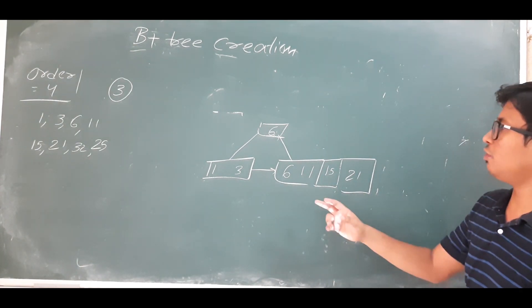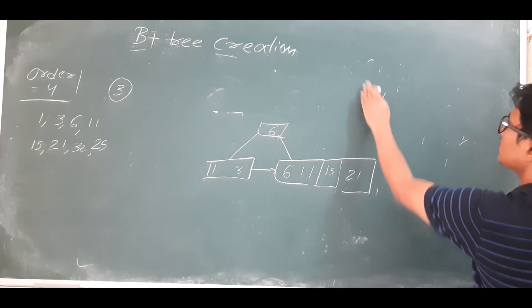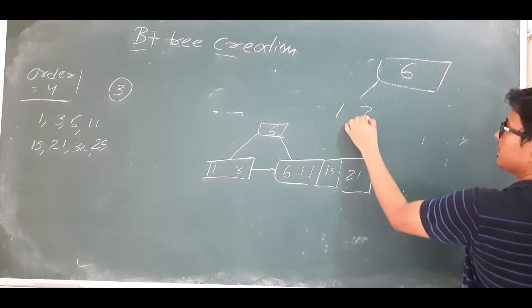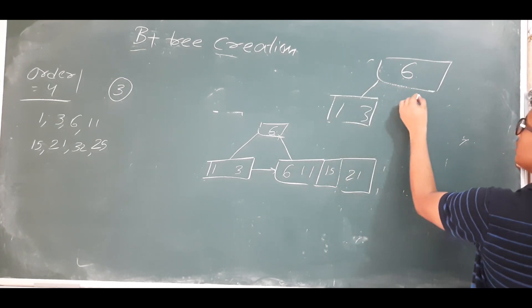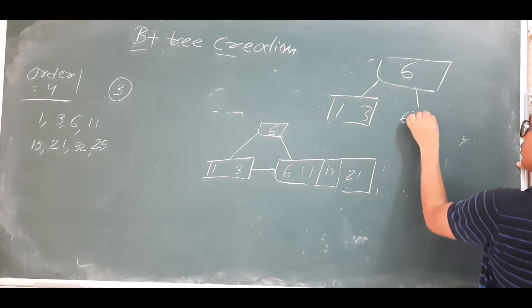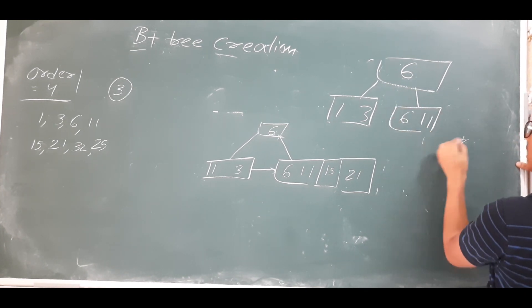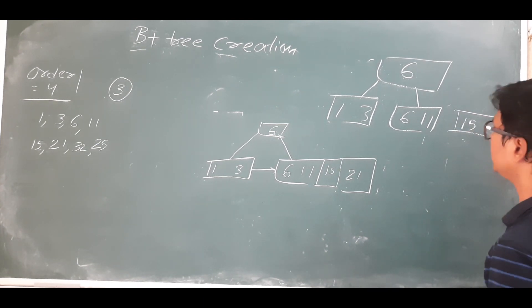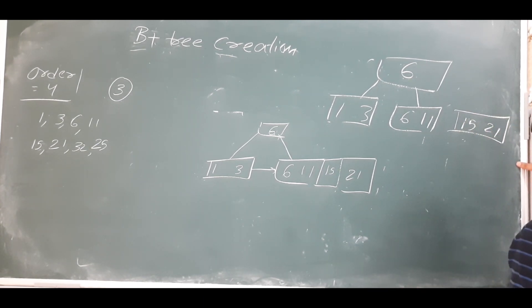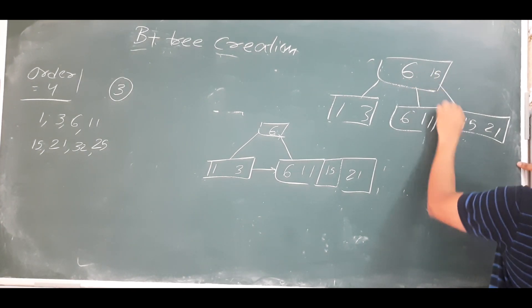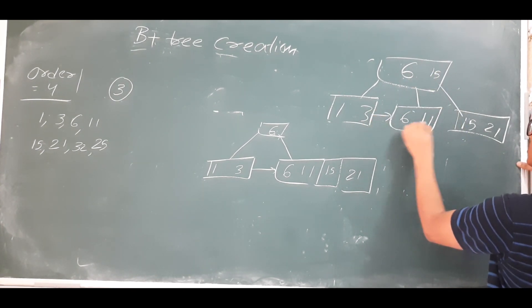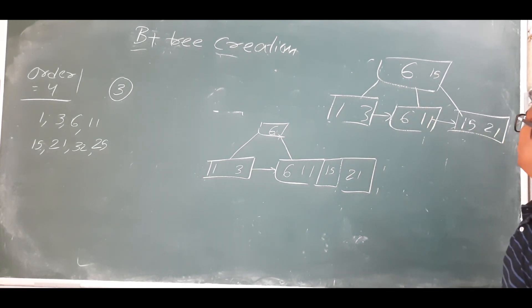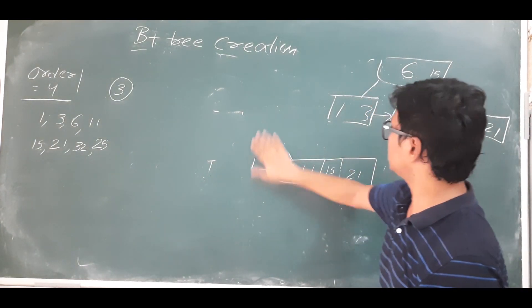It is in a leaf node overflow, so the first two elements — 6 and 11 — should be kept in the left subtree. Remaining elements 15 and 21 should be kept in the right subtree, and the minimum element from the right subtree should be kept in the parent node. This is the B+ tree you get after inserting 21.